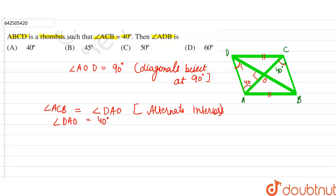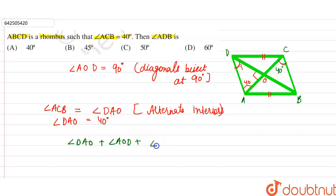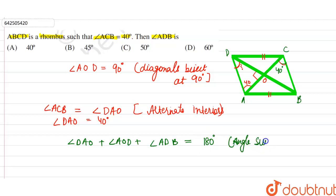Angle AOD is 90 degrees. Now, in any triangle, the sum of all angles is equal to 180 degrees. So we can say that angle DAO plus angle AOD plus angle ADB is equal to 180 degrees, by the angle sum property.